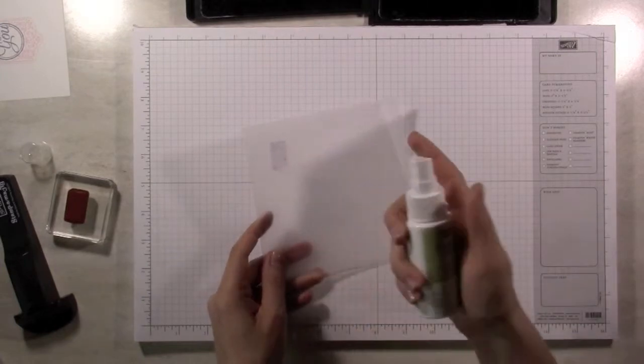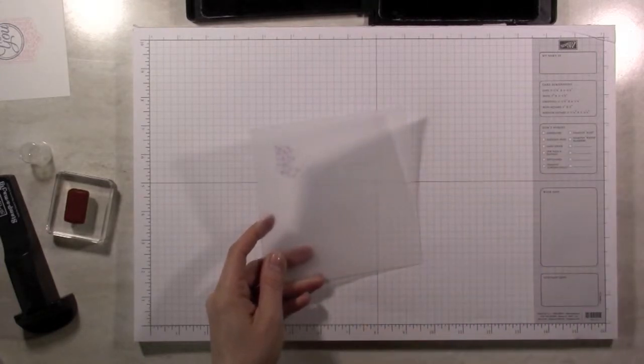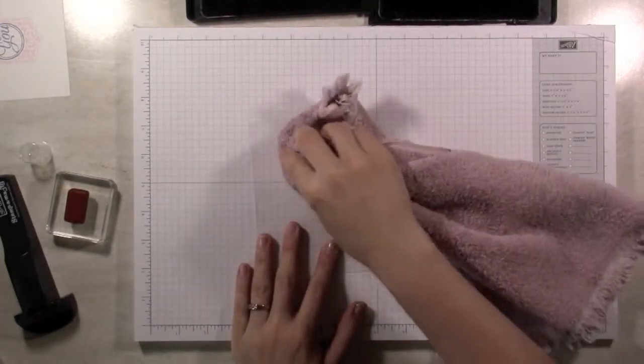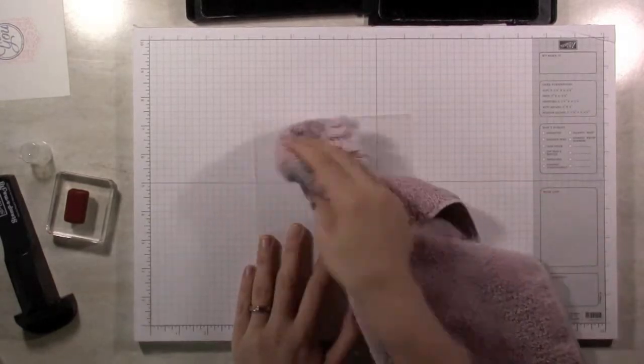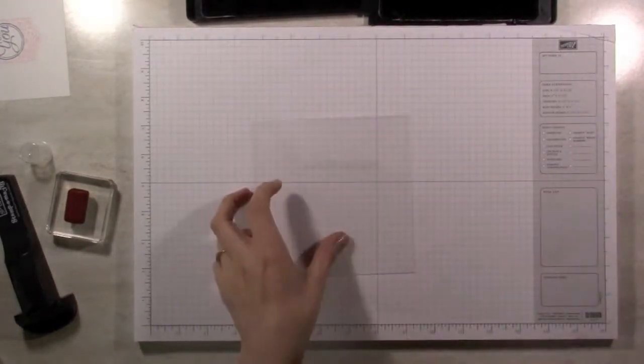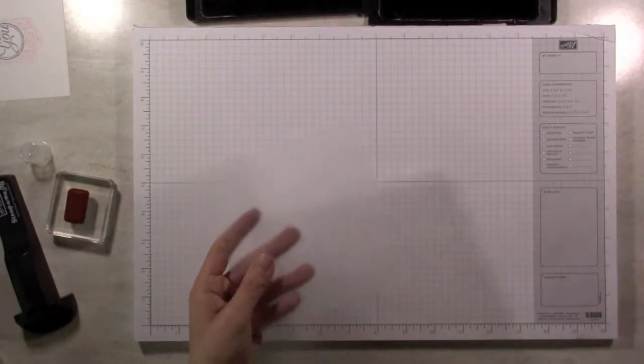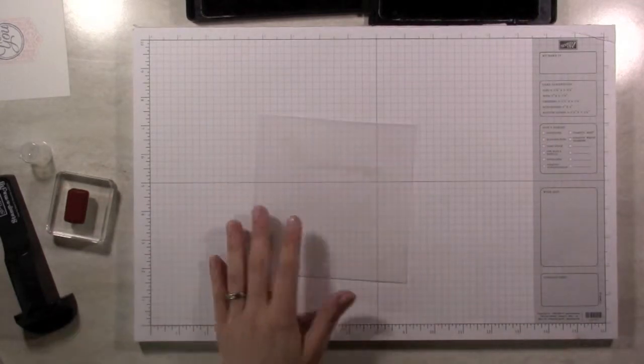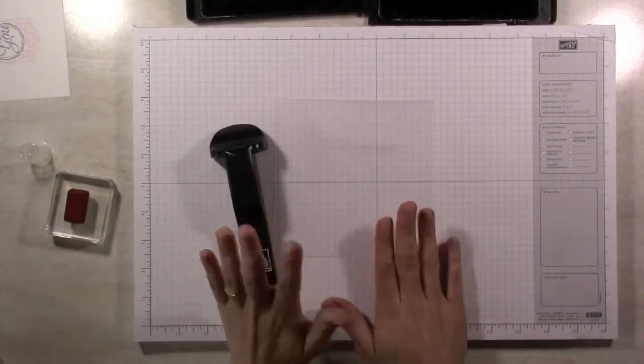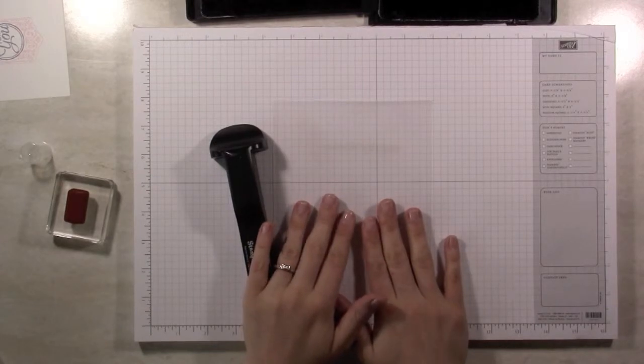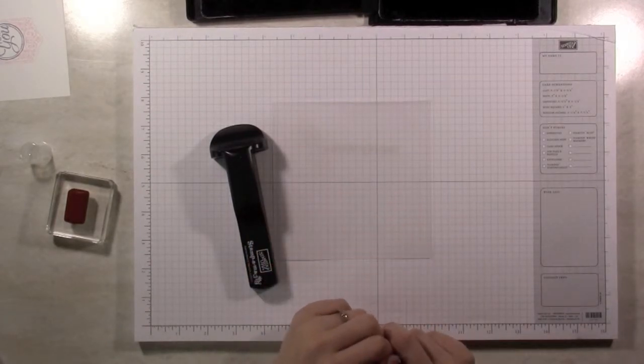A lot of the time I just use my stamp-a-ma-mist because it's always right here with me and just this yucky rag that I use for cleaning my stamping blocks. But the ink comes right off and it's ready to use again for my next project. So thank you so much for joining me today to learn about the stamp-a-ma-jig. I hope you found this helpful. Have a good one.